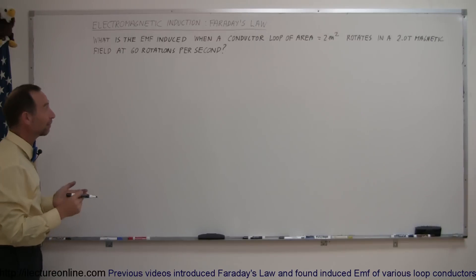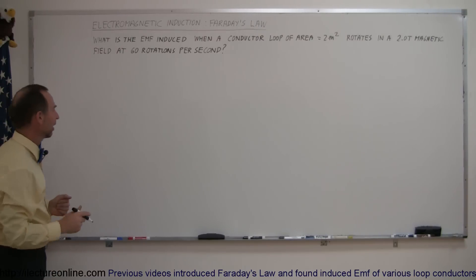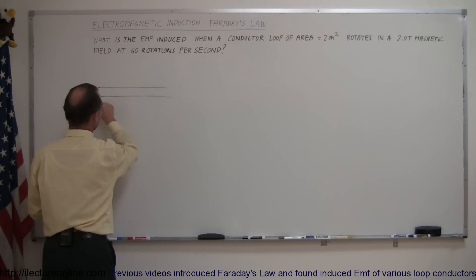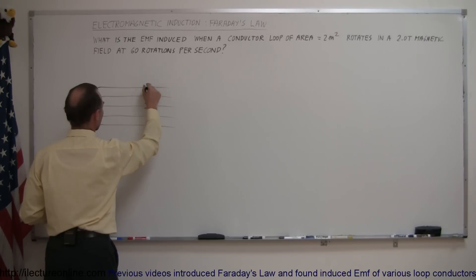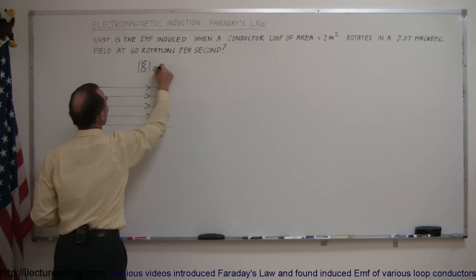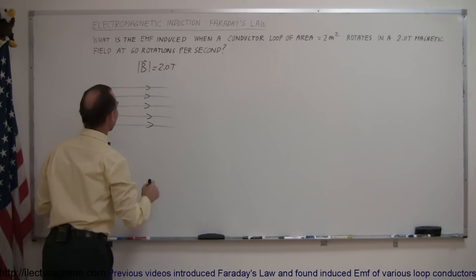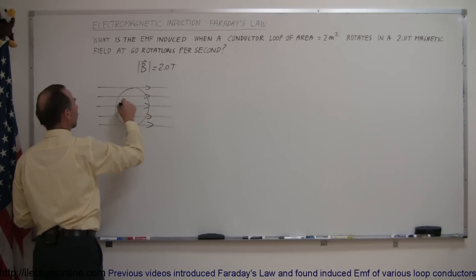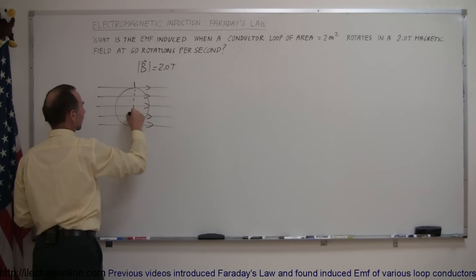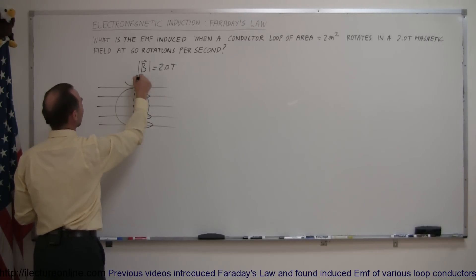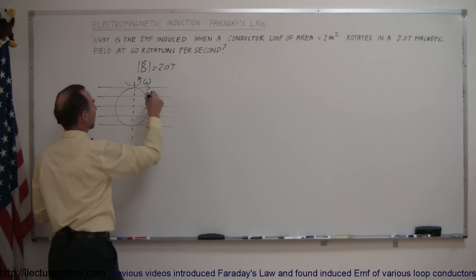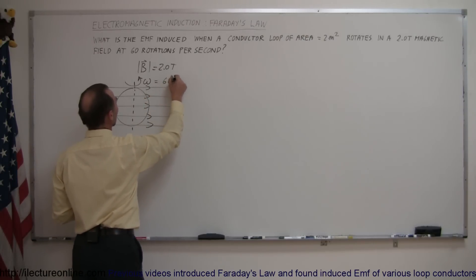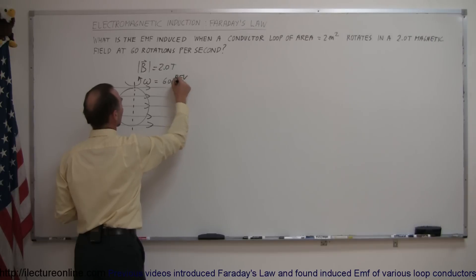The loop rotates at 60 rotations per second. So here we have the magnetic field with strength equal to 2.0 teslas, and we have a loop which is able to rotate on its axis. The loop can rotate at some rotational speed omega, and in this case omega is 60 revolutions per second.